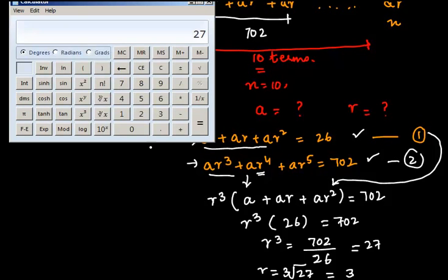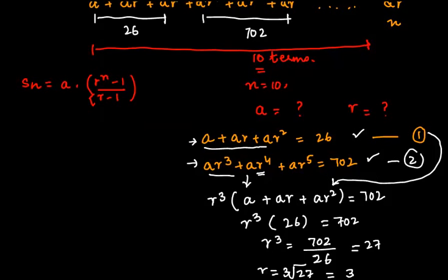You want to find out in the calculator as well? So 27 to root 3 is equal to 3. So I have received the value of r as 3.